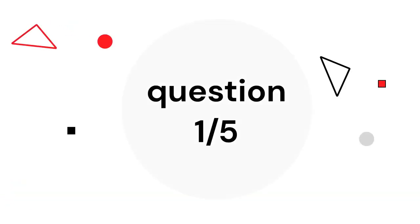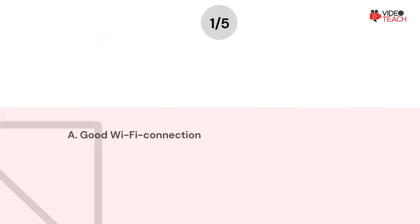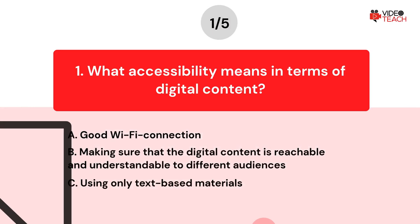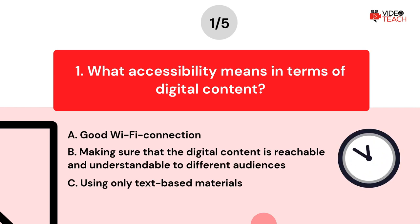Question number one. What does accessibility mean in terms of digital content? Option A: Good Wi-Fi connection. Option B: Making sure that the digital content is reachable and understandable to different audiences. Option C: Using only text-based materials. Now you have about 15 seconds to think about your answer.